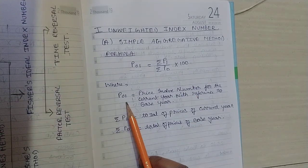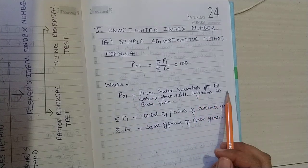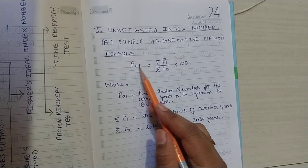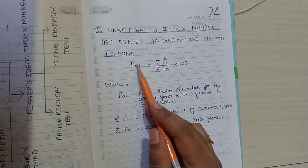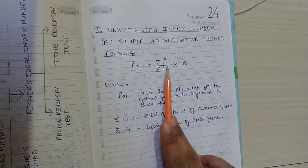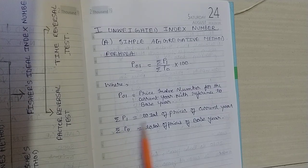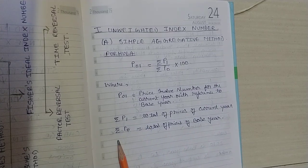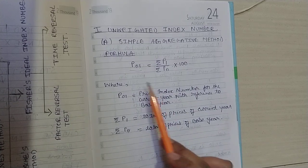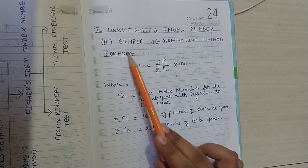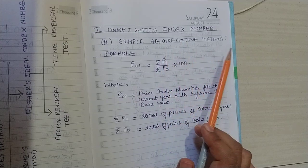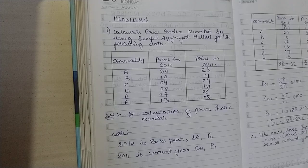Here, P₀₁ is the price index number for the current year with reference to the base year. P₁ refers to the summation of prices in the current year, and P₀ refers to the summation of prices in the base year. Using this formula, we will be solving problems under unweighted index numbers — specifically the simple aggregative method.